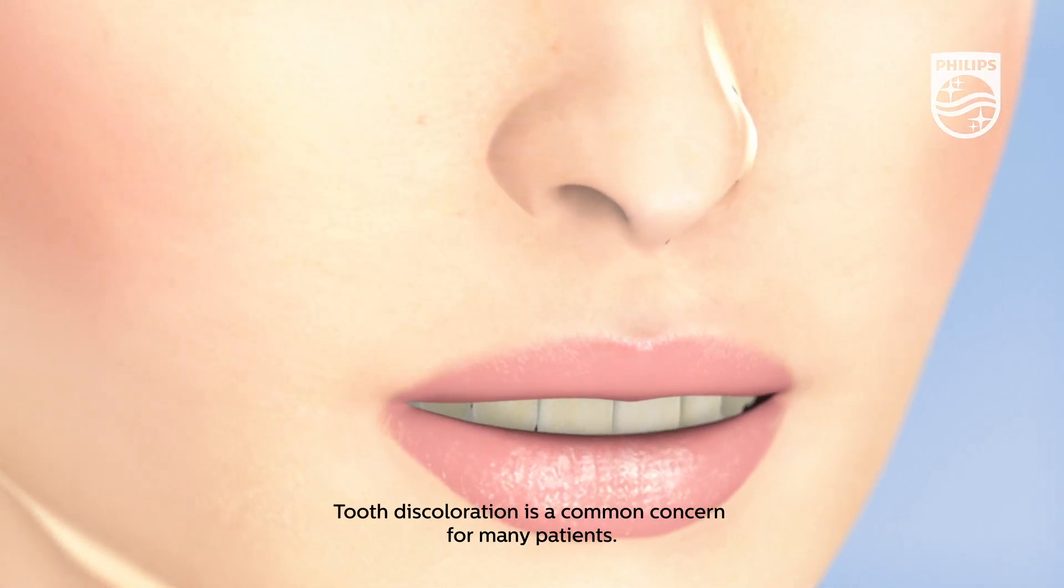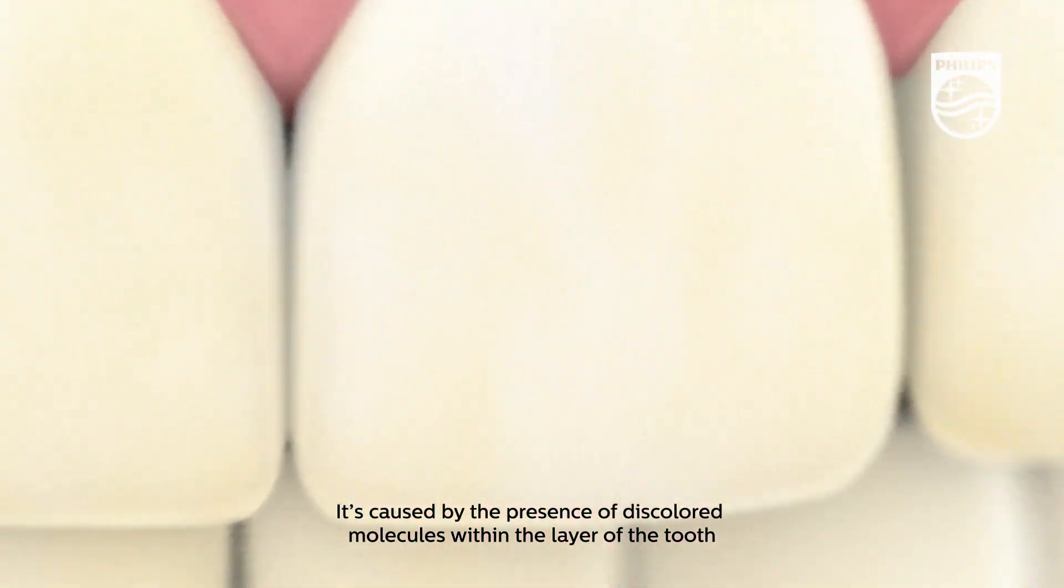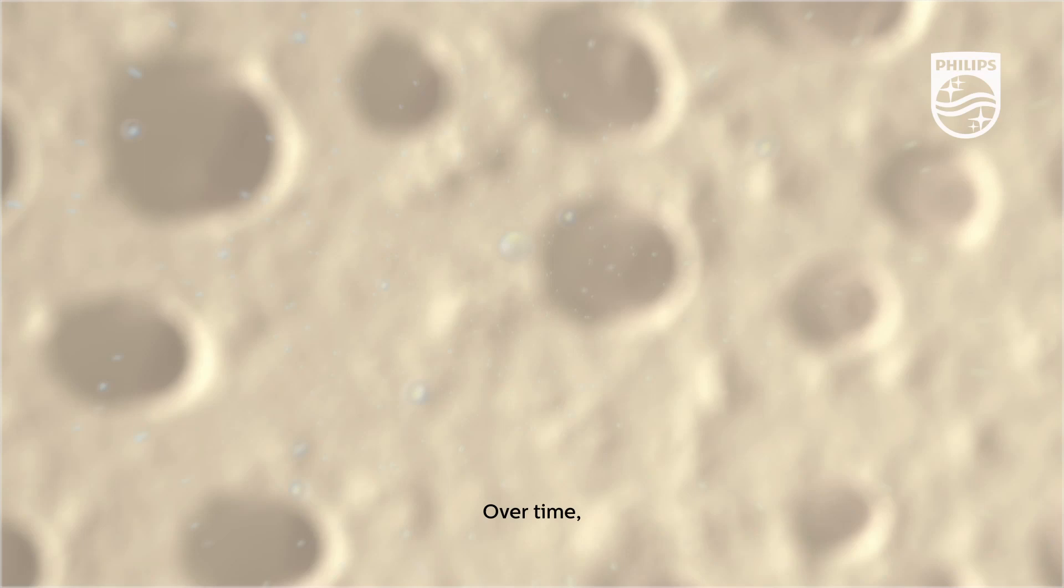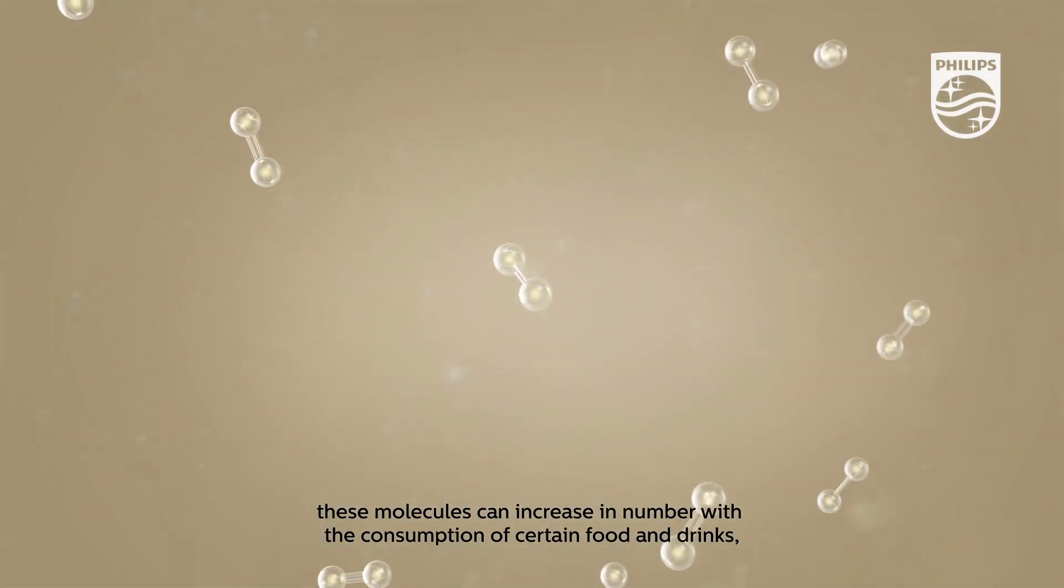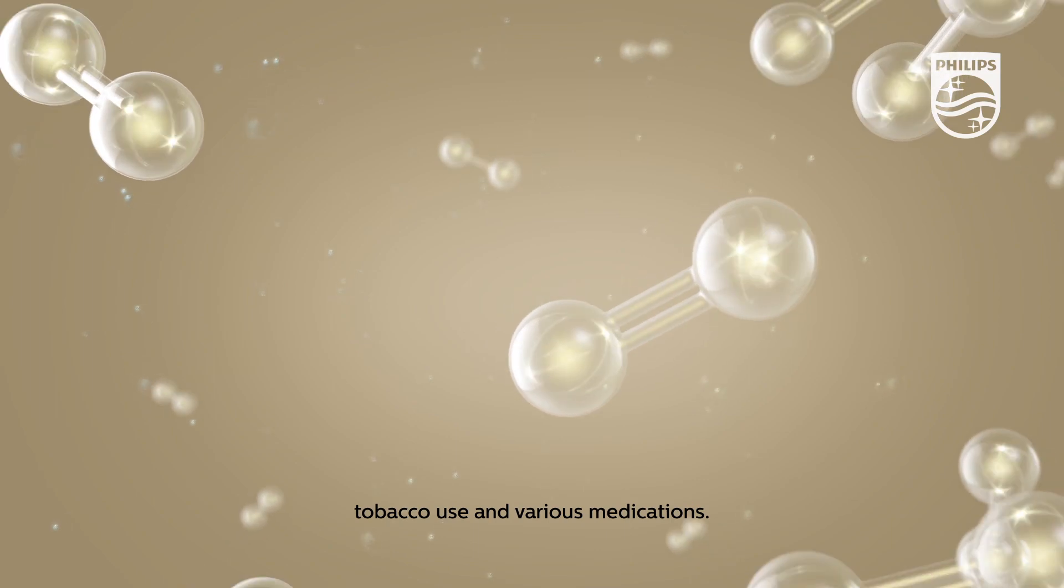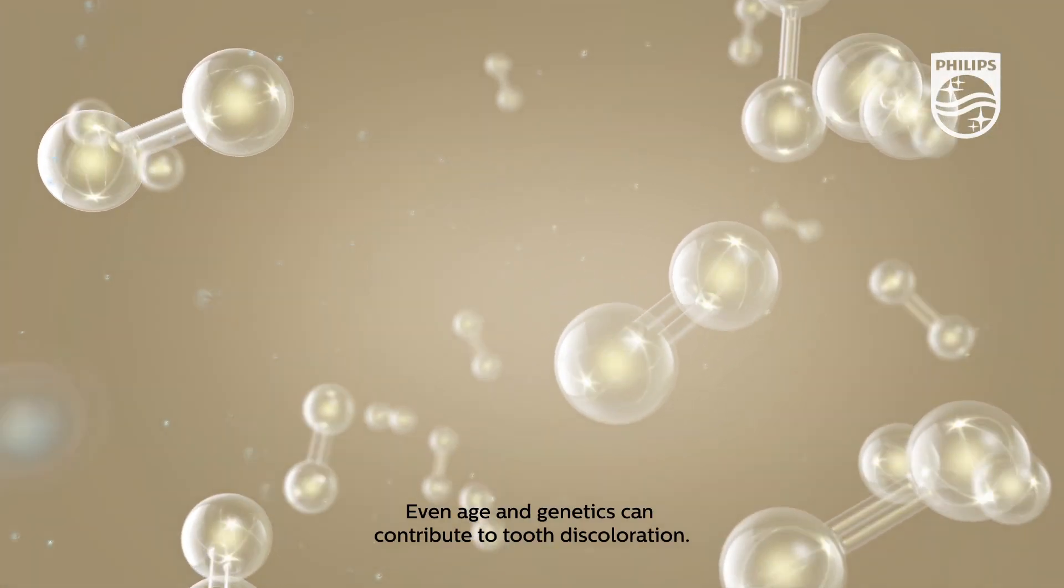Tooth discoloration is a common concern for many patients. It's caused by the presence of discolored molecules within the layer of the tooth just beneath the enamel, known as dentin. Over time, these molecules can increase in number with the consumption of certain food and drinks, tobacco use, and various medications. Even age and genetics can contribute to tooth discoloration.